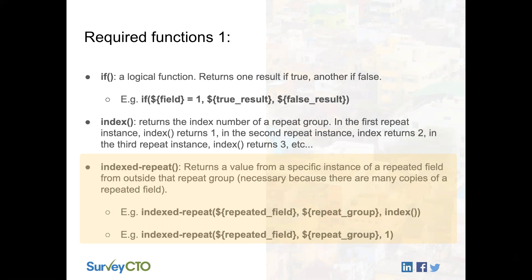In the first INDEXED-REPEAT example, we are returning a value stored in a repeated field named 'repeated_field' located in a repeat group named 'repeat_group', and we are calling these values dynamically using the INDEX value — which returns 1, 2, or 3 depending on your position inside a repeat group. This first example works inside another repeat group. The second example is static: it always calls the first value in the repeated field named 'repeated_field' found in the repeat group named 'repeat_group'. We'll be using both of these syntax examples in this sample form.